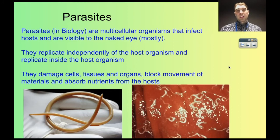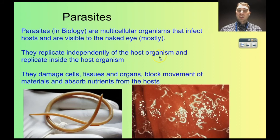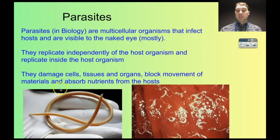The last pathogens we're going to look at are parasites. When we're looking at this area of biology, we specifically mean large multicellular organisms — usually animals — that you can see with the naked eye. They can reproduce independently of the host organism, usually inside the host. The way they cause damage is by damaging cells, tissues, and organs by reproducing inside those, blocking movement of materials, and absorbing your nutrients while living inside or on you.